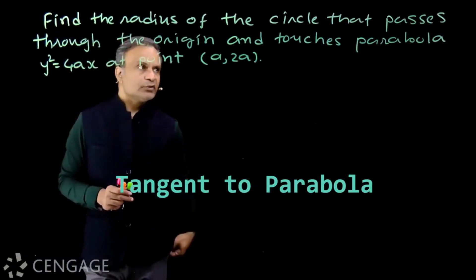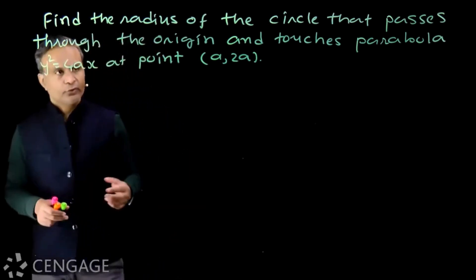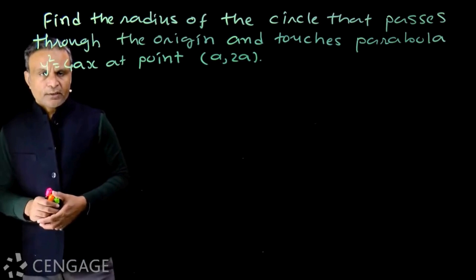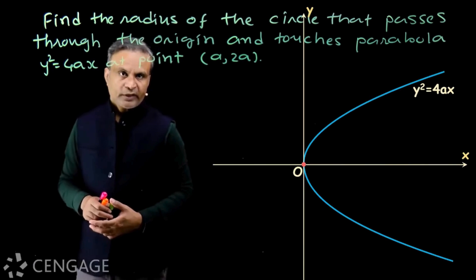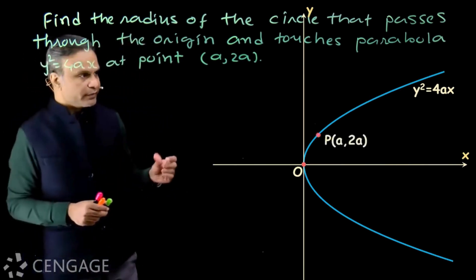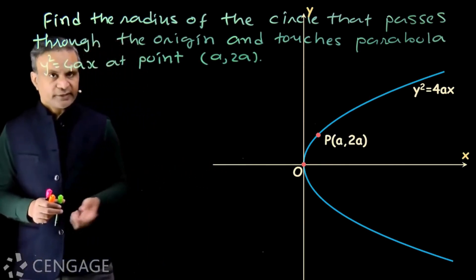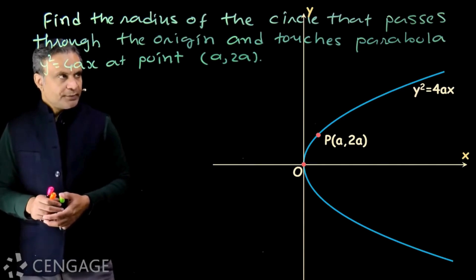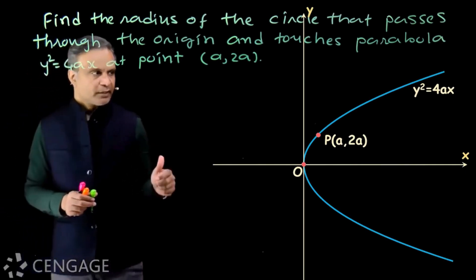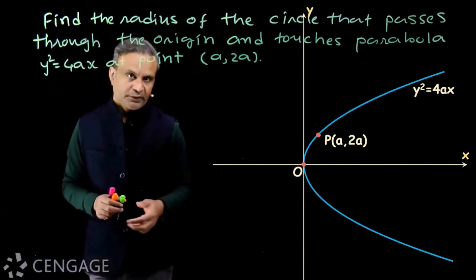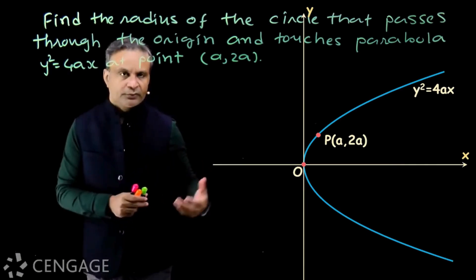The question is: find the radius of the circle that passes through the origin and touches the parabola y² = 4ax at point (a, 2a). In the diagram, we have the parabola y² = 4ax and a point P on the parabola with coordinates (a, 2a). This is one of the extremities of the latus rectum. We need to find the radius of the circle that passes through the origin and touches the parabola at point P.